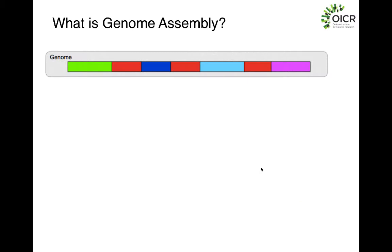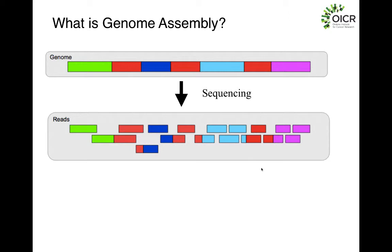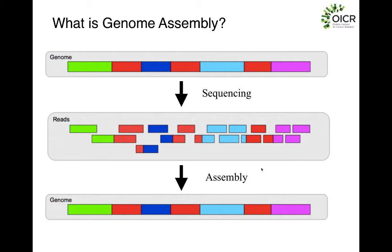So what is genome assembly to begin with? Say we take any genome of any species — this is how it currently looks, and we can see that we have a few repeats as well. When we do our sequencing, we end up reading smaller chunks of this original genome at different positions. The task in genome assembly is how do we take these individual reads and connect them again to construct our original genome. It doesn't seem too complicated when you initially start out, but it is actually quite a difficult computational problem.